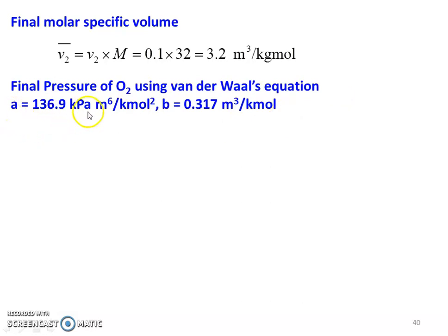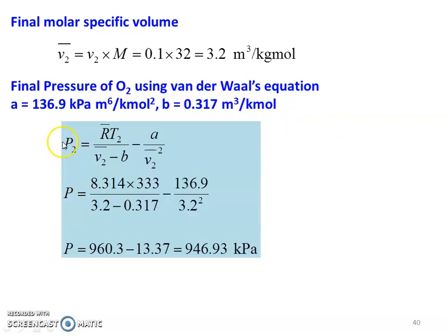Final pressure of O2 using the Van der Waals equation: constant A = 136.9 kilopascal meter cube per kilogram mole square, constant B = 0.317 meter cube per kilogram mole. Substituting: P2 = R-bar T2 divided by (V2-bar minus B) minus A divided by V2-bar squared = 8.314 into 333 divided by (3.2 minus 0.317) minus 136.9 divided by 3.2 squared = 960.3 minus 13.37 = 946.93 kilopascal.